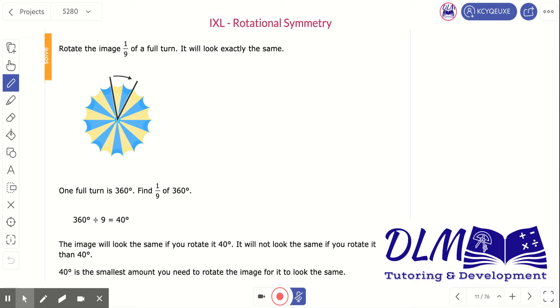So, to be able to figure out how many degrees I would have to turn this image in order for it to look exactly the same, the least amount of degrees, I'm simply going to divide 360 degrees, the degrees in a circle. I'm going to divide that by how many sections there are, in this case, nine sections. So, 360 degrees divided by nine sections means that the image will look the same if you rotate it 40 degrees.